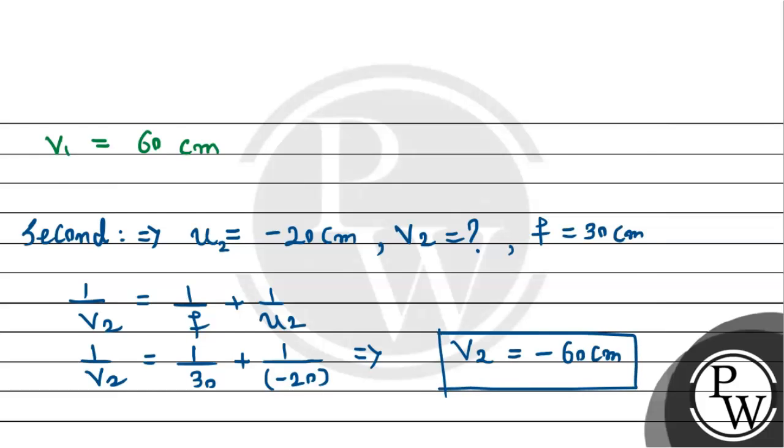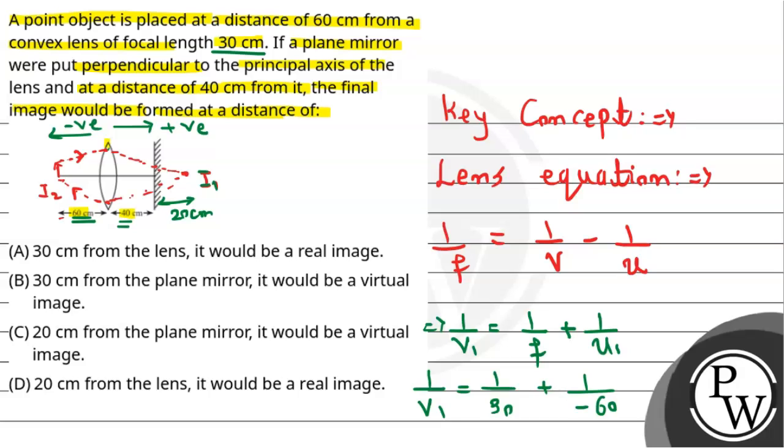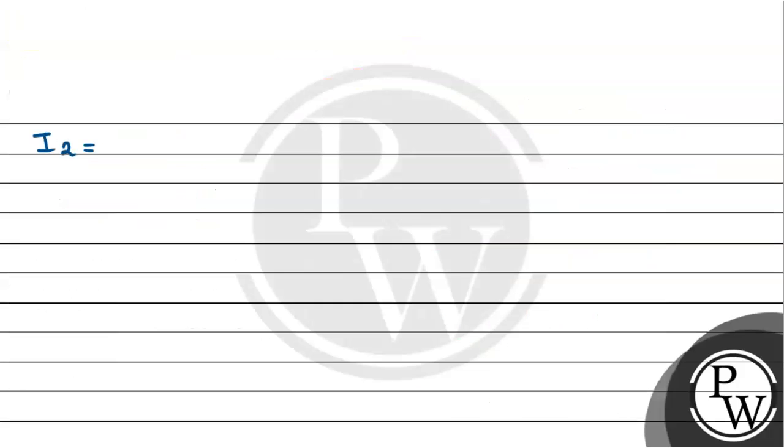Now as you can see minus 60. So minus sign indicates that it is present on the left hand side, also minus 60 cm from the lens. So thus the final image is nothing but virtual at a distance of... So we would say that the final image I2 is nothing but virtual and it will be at a distance of 60 cm. From this we will subtract 40, that is the distance between mirror and lens, so that we will get the exact value of the final image I2 from the plane mirror.